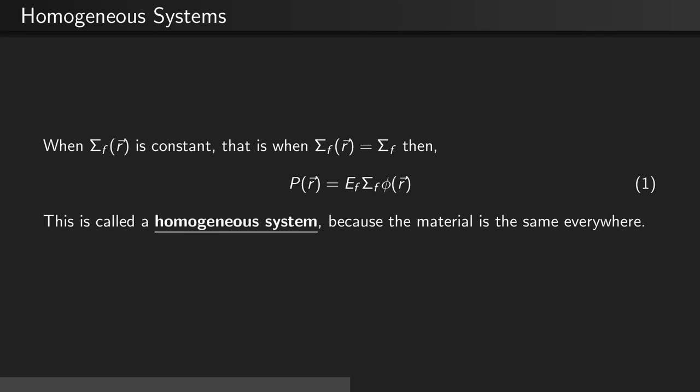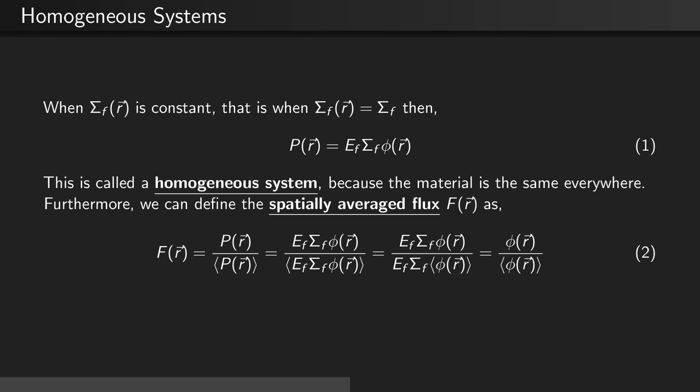This is called a homogeneous system because the material is the same everywhere. Furthermore, we can define a spatially averaged flux as the power as a function of position divided by the core average power. In the event of a homogeneous system, the energy released per fission and the macroscopic fission cross-section both cancel, so the spatially averaged flux is just the flux as a function of position divided by the average flux.